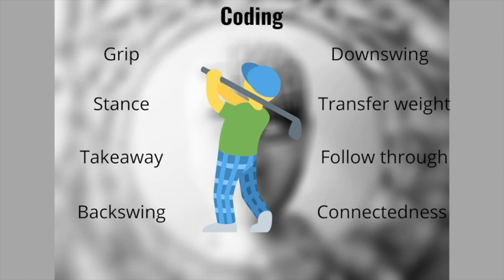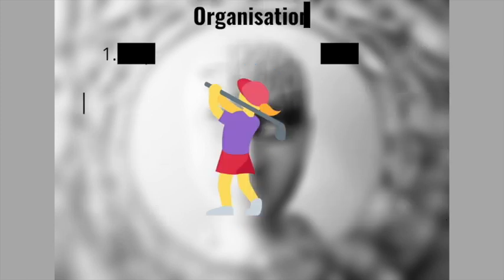Fifth is coding — naming or giving labels to information. In golf: grip, stance, takeaway, backswing, downswing, transfer weight, follow-through, connectedness. These codes mean a coach can say 'your takeaway wasn't quite right' and the performer can draw on that information instantly, making learning quicker and less confusing. Sixth is organisation — providing information in a logical order for meaningful learning. You present the codes in sequence from the start to the end of the swing.